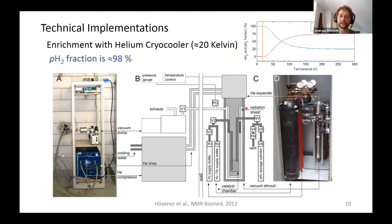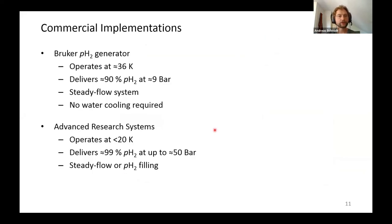A very similar setup also uses a helium cryo-cooler, with a special requirement for clinical installation: all electronics were inside the building while all explosive parts were installed outside, separated by a wall. A cooling finger is cooled to 20 K, hydrogen passes through the catalyst chamber, and the system delivers 98% parahydrogen, which can be filled into gas bottles for experiments. This type of system is also commercially available, including the Bruker system operating at 36 K, delivering approximately 90% parahydrogen at up to 9 bar in a steady-flow configuration.